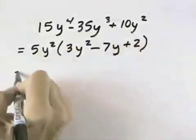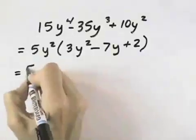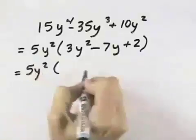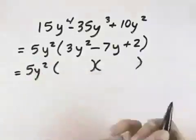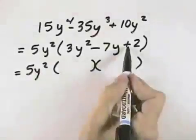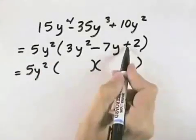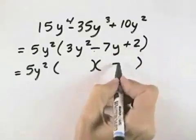Now we want to look at this remaining trinomial and see if it can be factored. So we carry the 5y² down. We can see the second sign is positive, which means both signs are the same, so they must both be negative, which is our first sign.